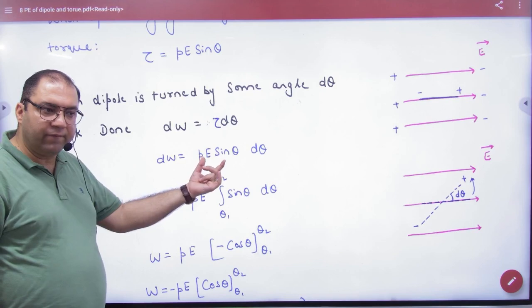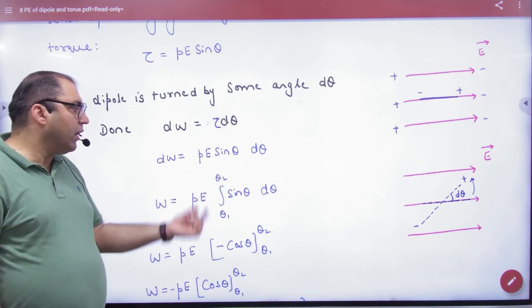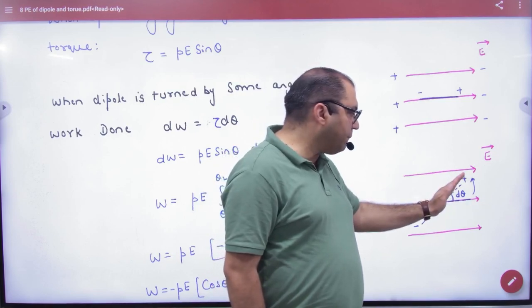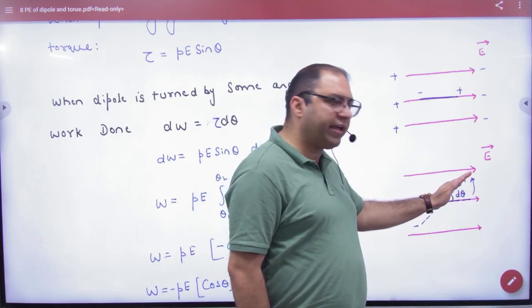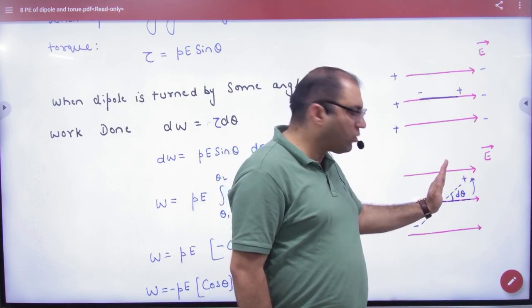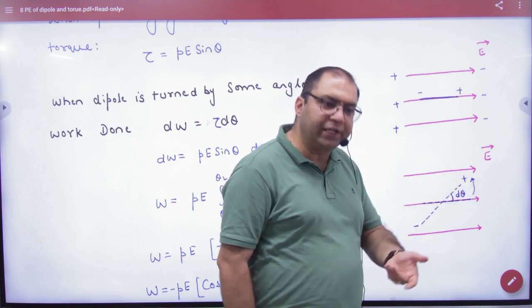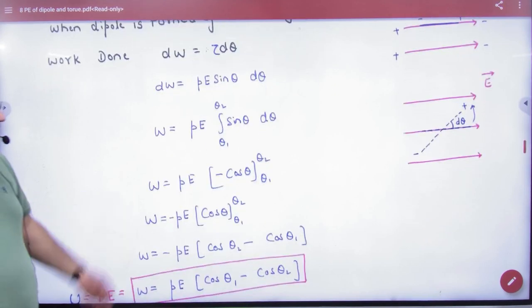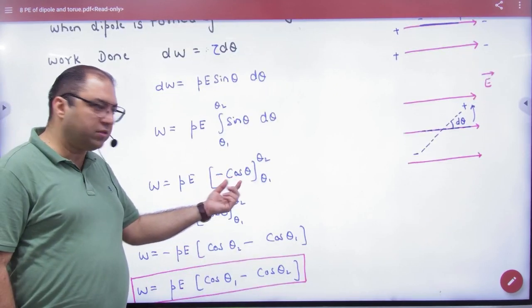Torque is P E sin theta. So suppose your dipole has electric field P vector has initial angle theta1, then rotate what new angle is theta2. So in this case, limit theta1 to theta2, sin integration minus cos theta1 to theta2.